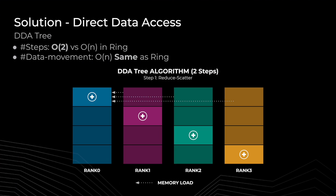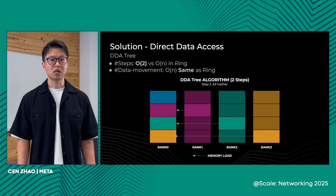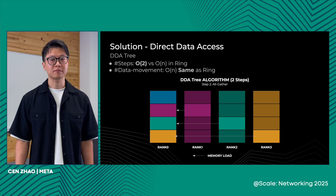For slightly larger message sizes, we have another variant called DDA tree. Unlike DDA flat, which does reduction in one step, DDA tree does reduction in two steps: first a reduce-scatter, then an all-gather. In this way, we move the same total amount of data as ring, but in larger chunks per step, reducing latency to a constant factor of O(2). We expect this to outperform the NCCL baseline for slightly larger messages.